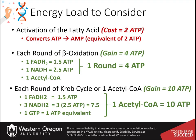The overall energy load to consider during fatty acid oxidation includes the energy input to convert the fatty acid to fatty acyl-CoA. This process breaks down ATP into AMP, losing two phosphate groups, which is equivalent to a cost of two ATP molecules.